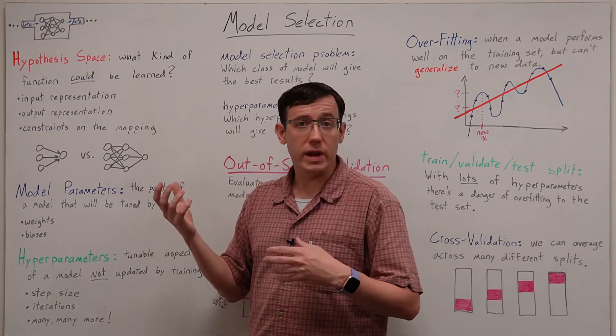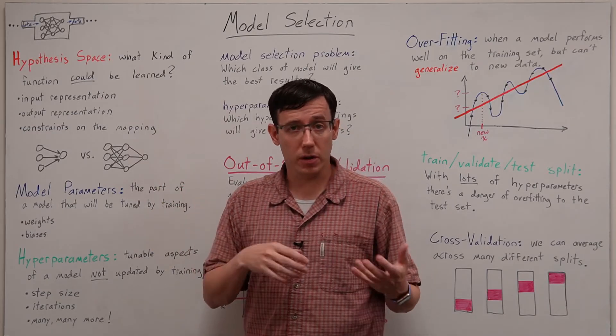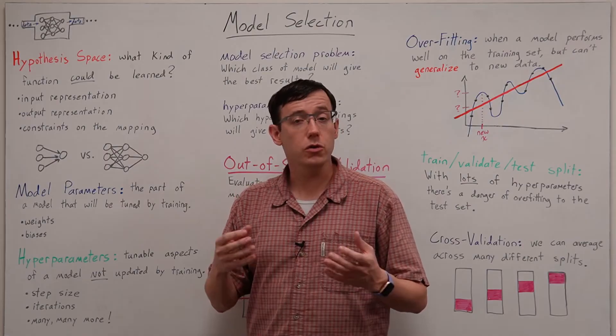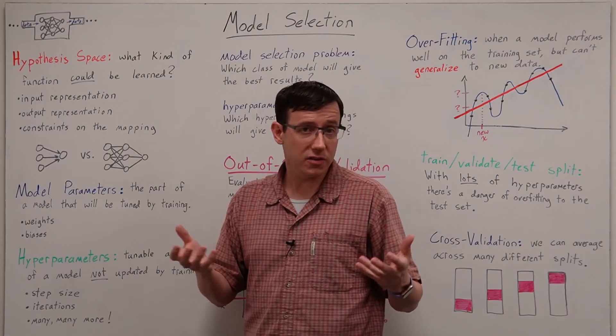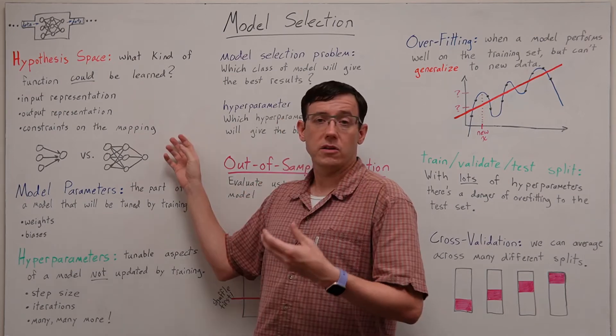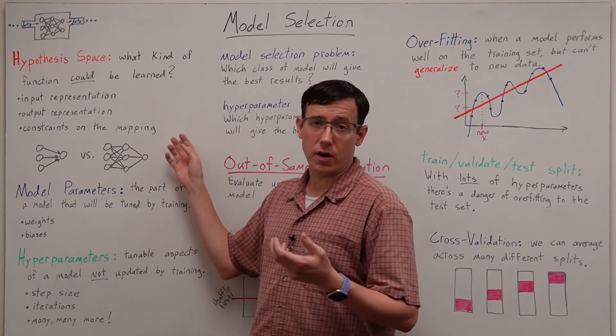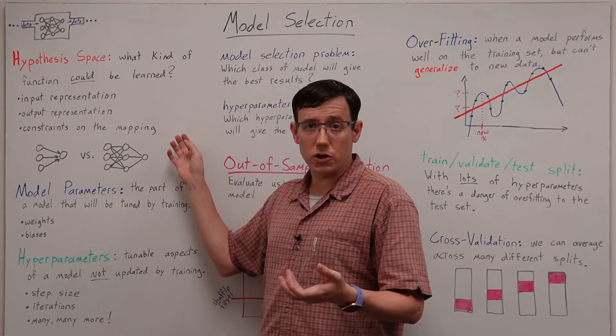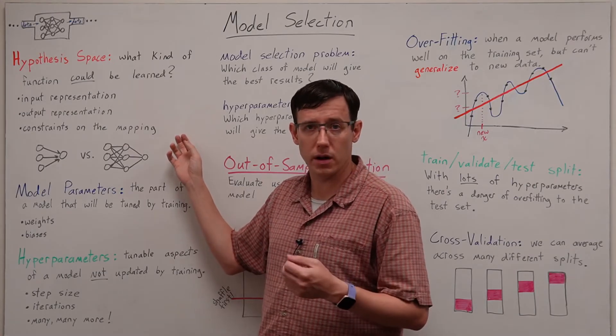Remember that when we train a machine learning model, we are trying to choose among many possible functions the one that best represents our data. And so the hypothesis space describes the sort of functions that could be the result of our training.